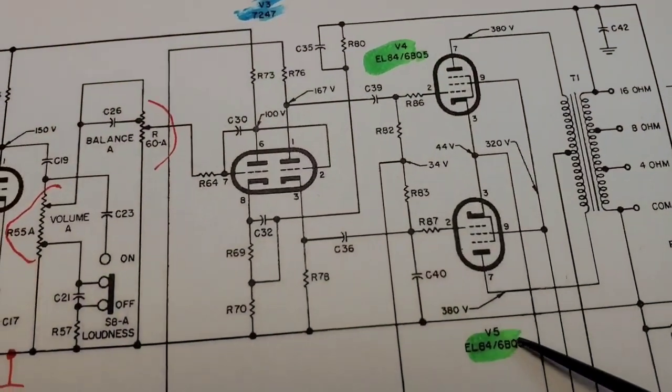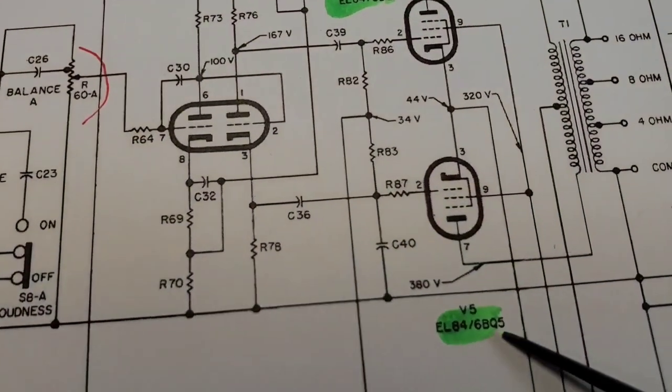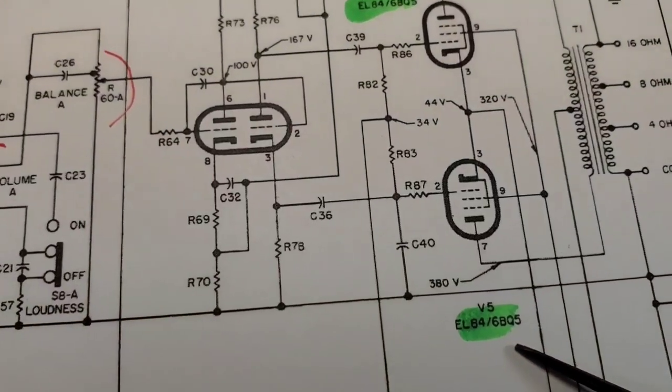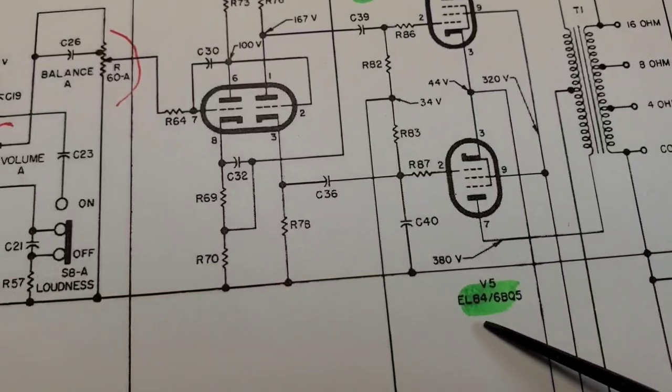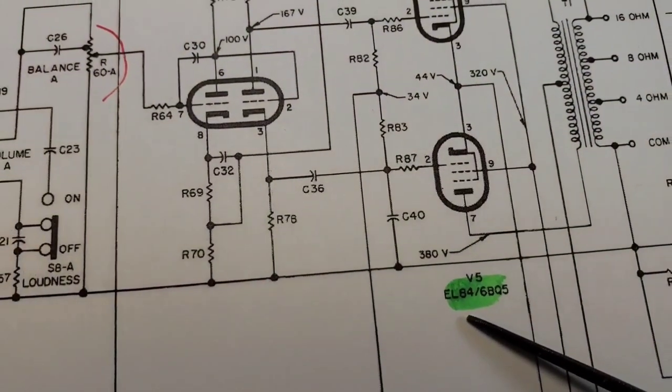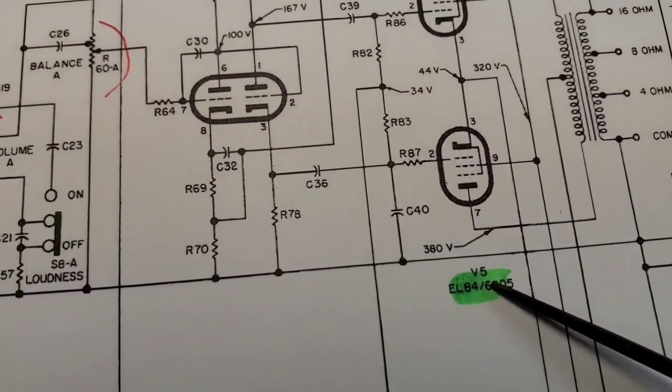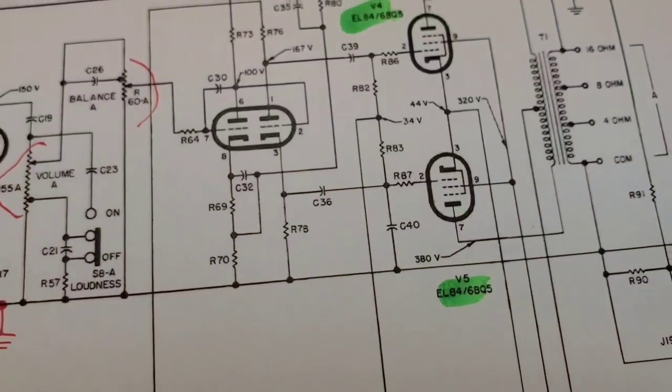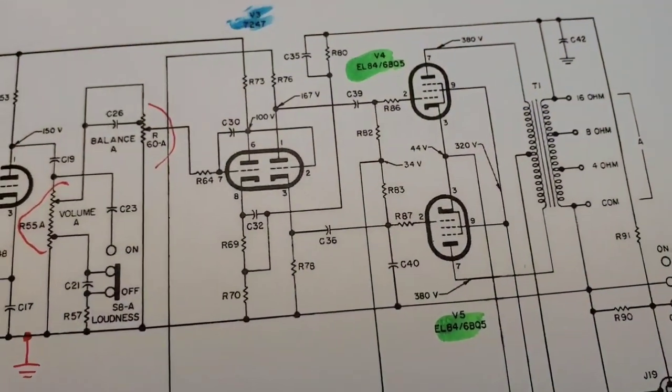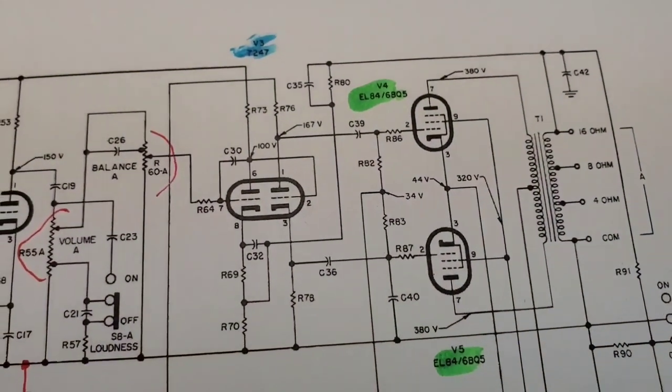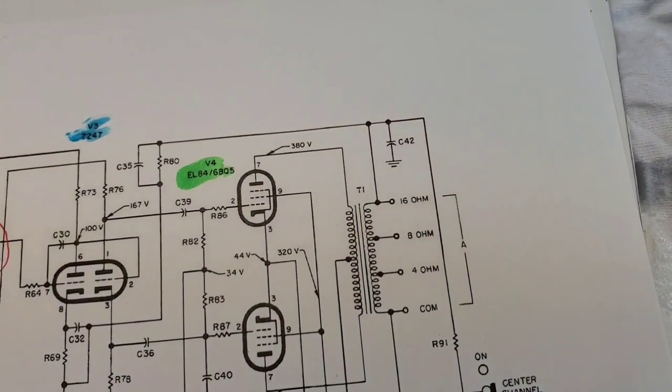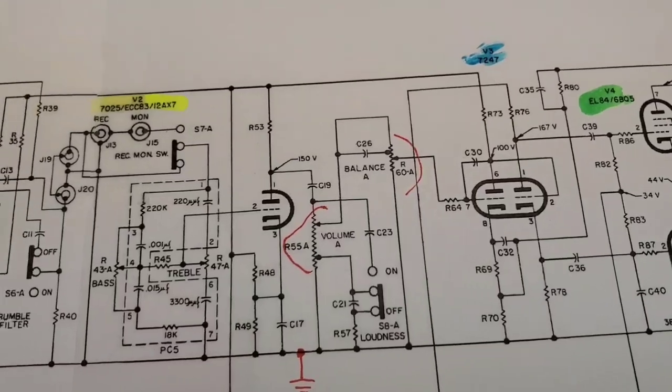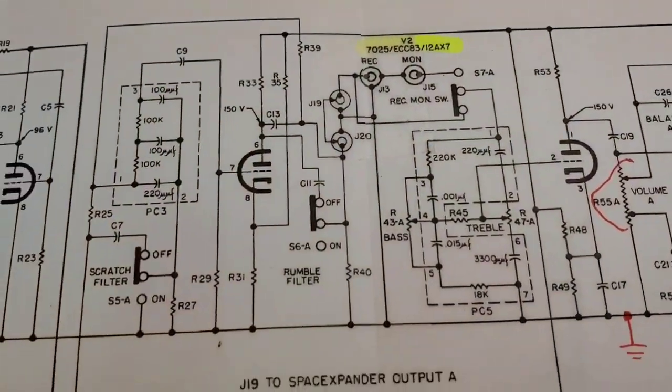Sometimes you'll see EL84, 6BQ5, 7189, or sometimes strictly 7189. They're the same and they're not the same. The 7189 can take a much higher plate voltage. If you use a 6BQ5 where 7189 is called for, it may work for a while, but probably won't last very long. Certainly not as long as the correct tube.